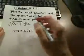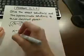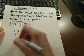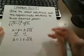Okay, and if we're going to leave it in exact form, first thing we need to do is take this one and move it over to the other side. So we have x is equal to 1 plus or minus the square root of 12.